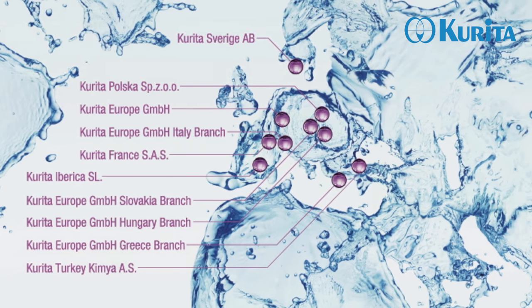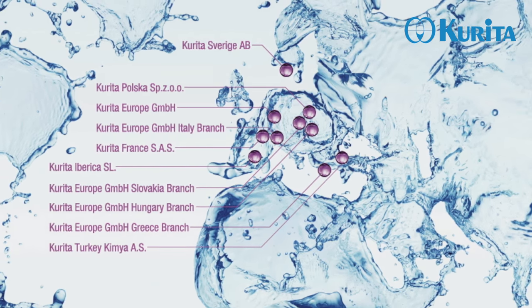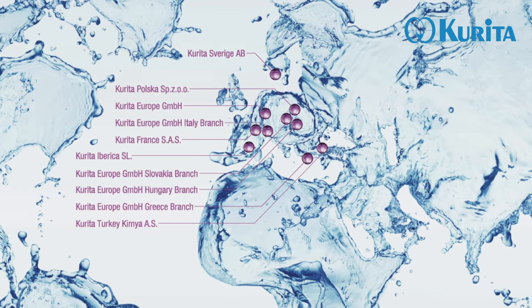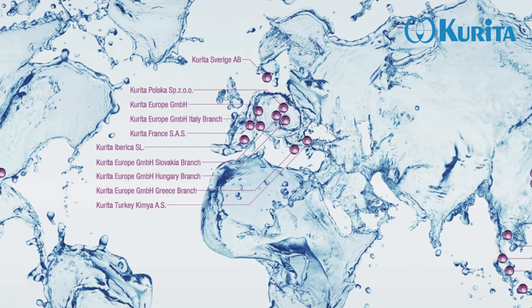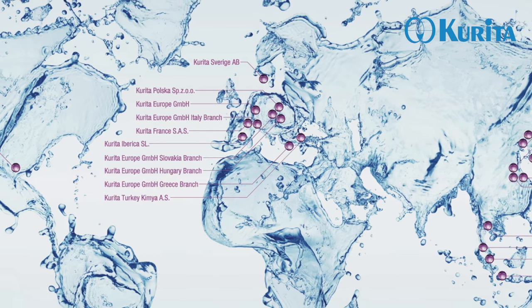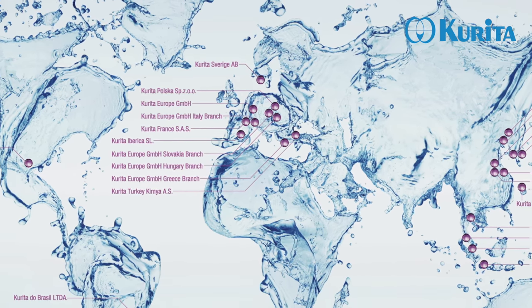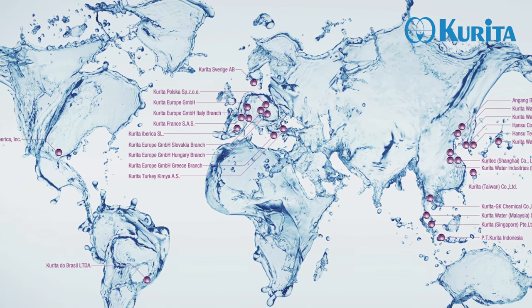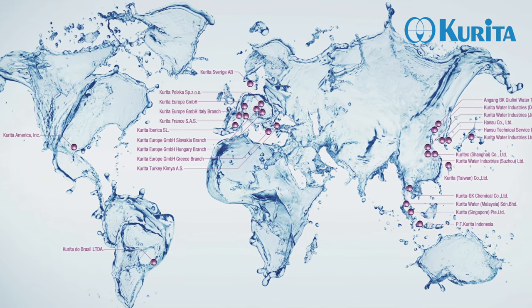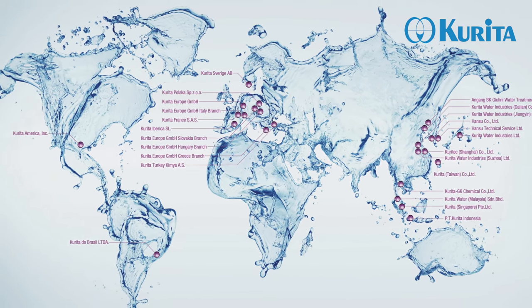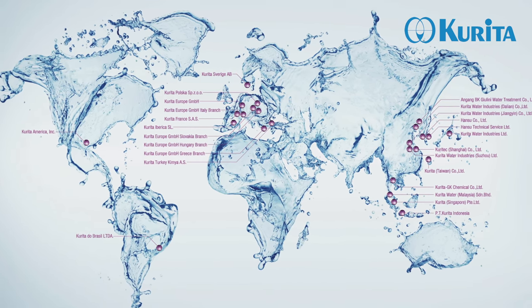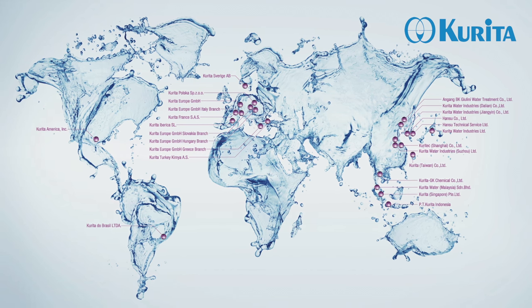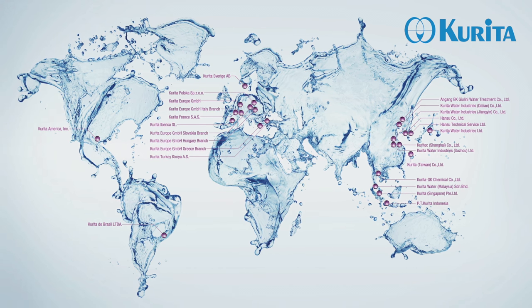Curita Europe is, with its business line paper solutions, one of the market leaders for functional paper additives. One of the core products of Curita are the wet strength agents with the trade name Gelatin. Curita produces and sells 80,000 tons of strength and sizing polymers from its facilities in Europe and Asia.